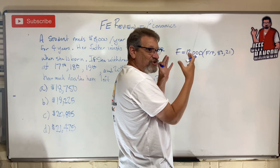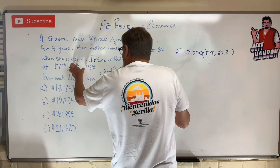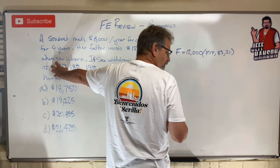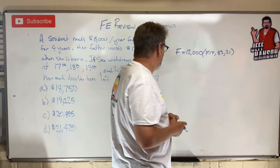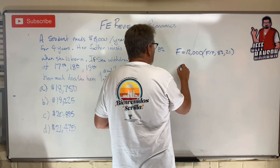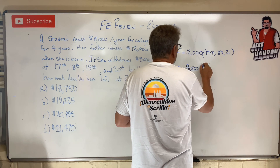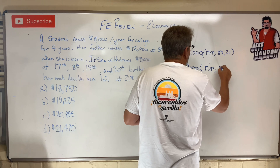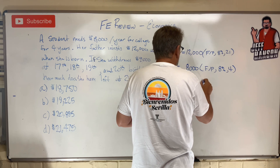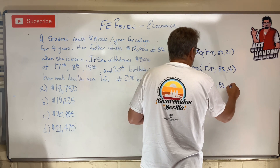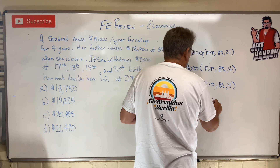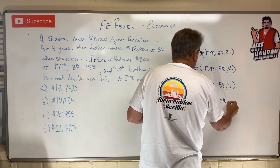But from that total future amount, I've got to subtract each payment plus the interest that goes along with it. The first payment at year 17 is four years from year 21, the next is three years, then two years, then one year. So: minus $8,000 times F given P 8% for four years, minus $8,000 times F given P 8% for three years, minus $8,000 times F given P 8% for two years, and one more.